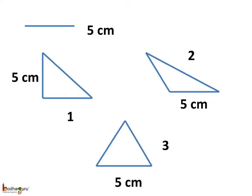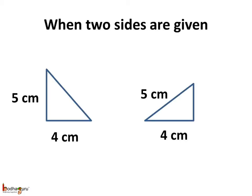We know we can make many triangles if the length of only one side is given. All three triangles have a side equal to 5 cm, but they are all different. Same way, when two sides are given, even then we can draw many triangles which are not the same.